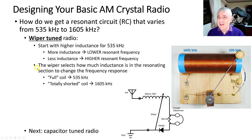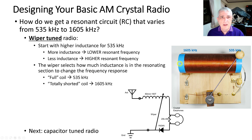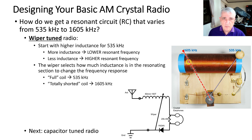The wiper selects how much inductance is in the resonating section. At maximum coil, that's 535 kHz; at the other extreme the coil is fully shorted and you're at 1605 kHz. When the signal comes in, if the wiper is all the way to the far side, it immediately goes to ground — that is the 1605 kHz position.